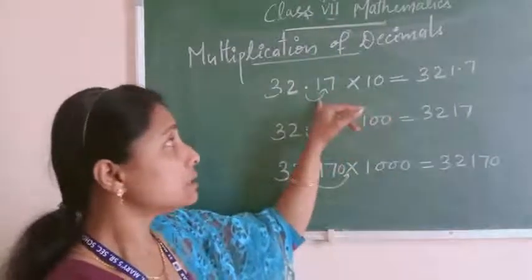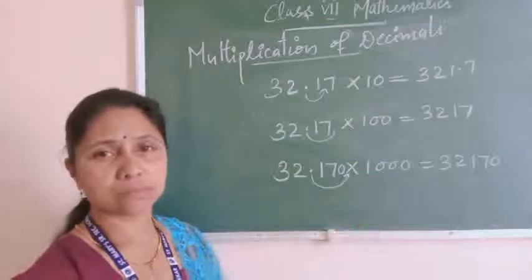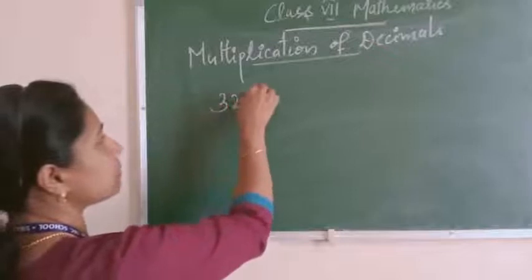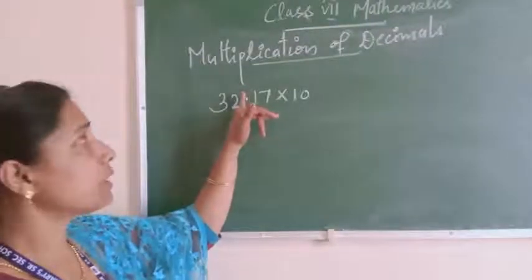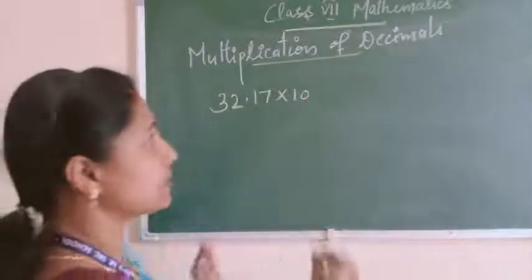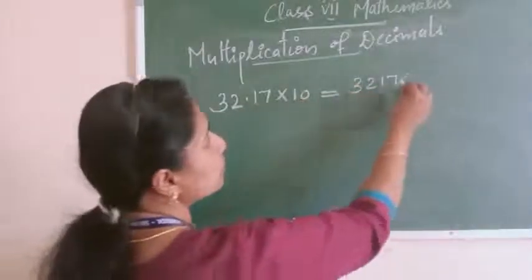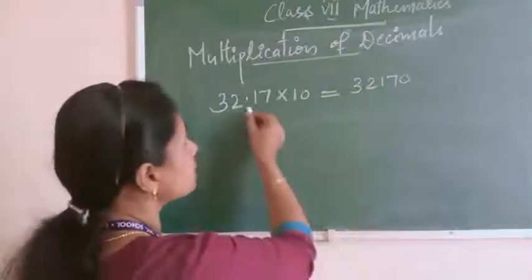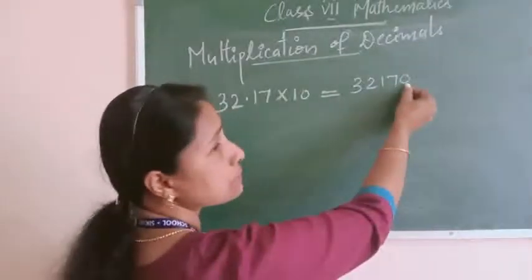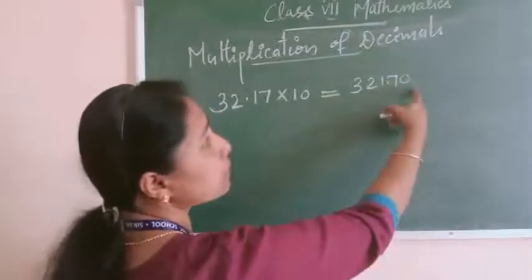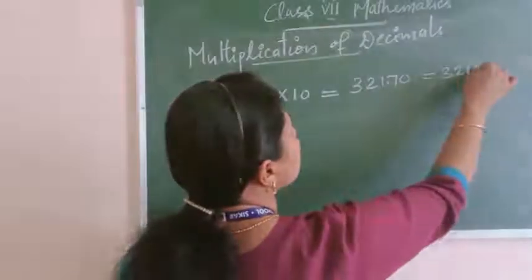If anyone is confused about how the point is shifted, there is another method. Take the same example: 32.17 multiplied by 10. Forget about the point and multiply normally — just put one zero at the right-hand side, giving 32170. Now, in the question there are two digits after the point, so in the answer also there should be two digits. Count from the right: 1, 2. Your answer is 321.70, which equals 321.7 — the same answer as the first method. In decimal numbers, a zero on the right-hand side has no value.